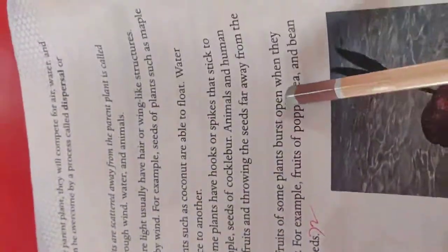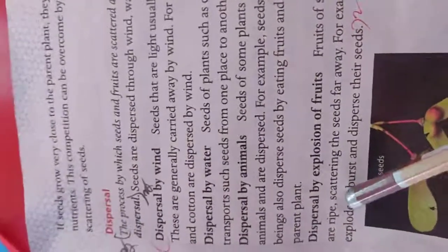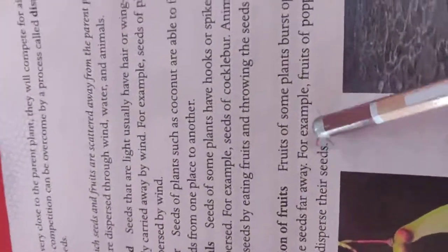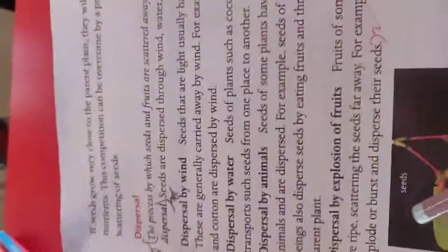Dispersed by explosion of fruits. Fruits of some plants burst open when they are ripe. The seeds are spread out, scattering the seeds far away. For example, fruits of peas and beans explode to disperse their seeds.